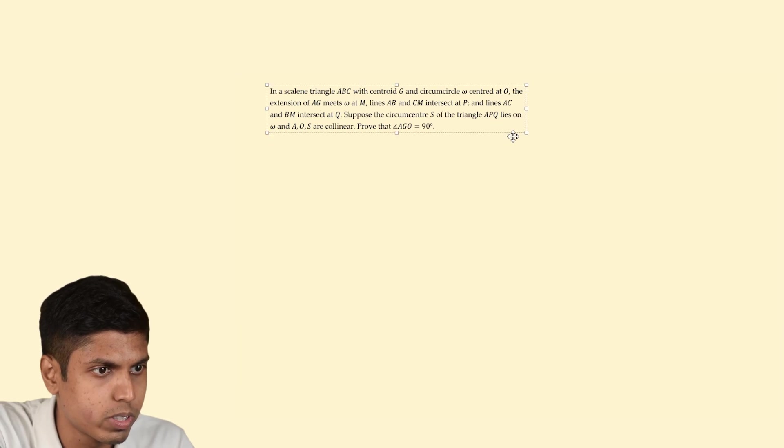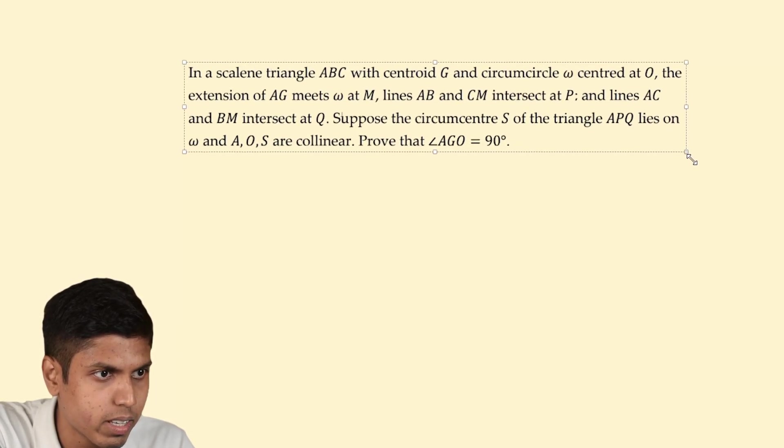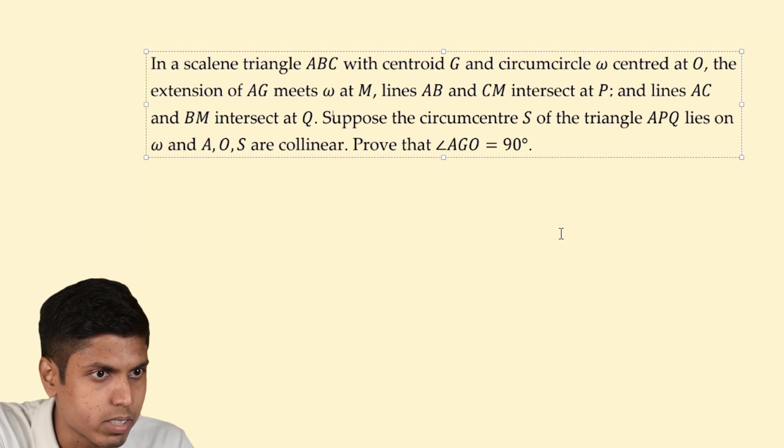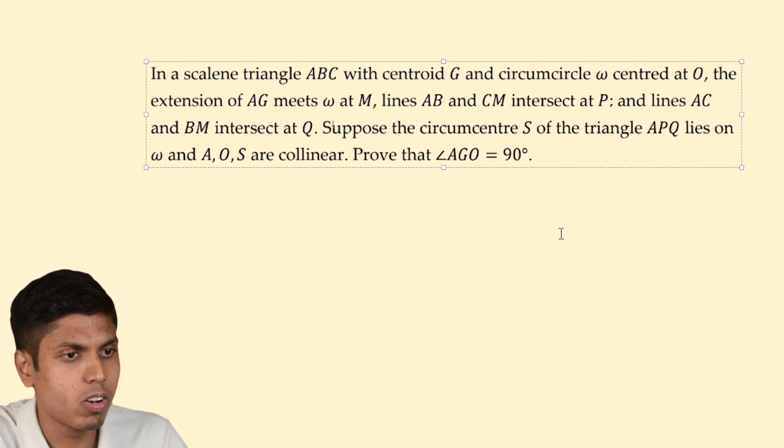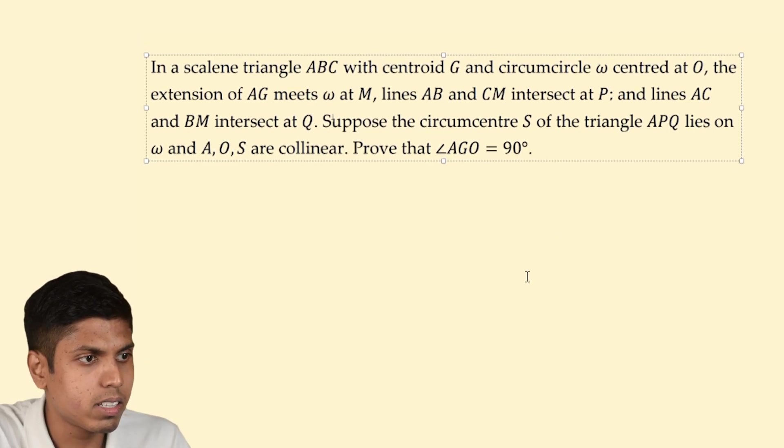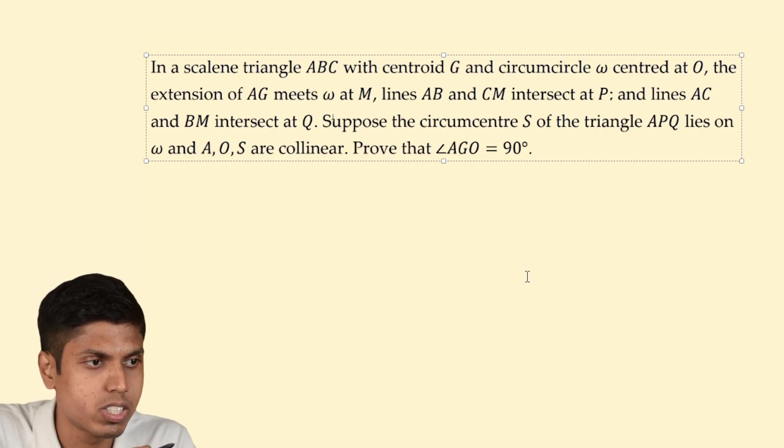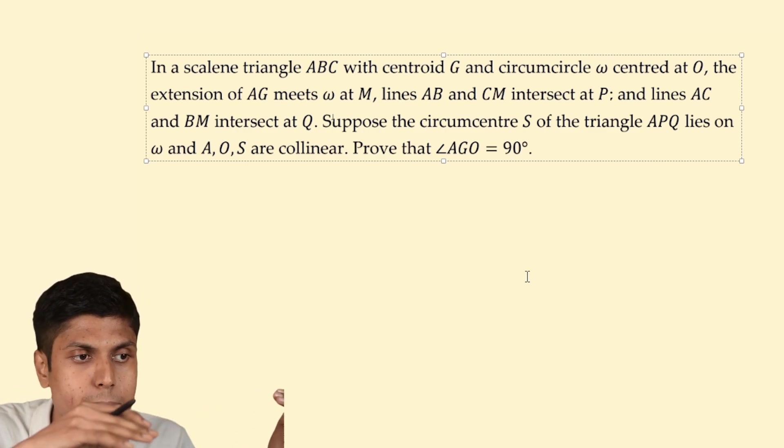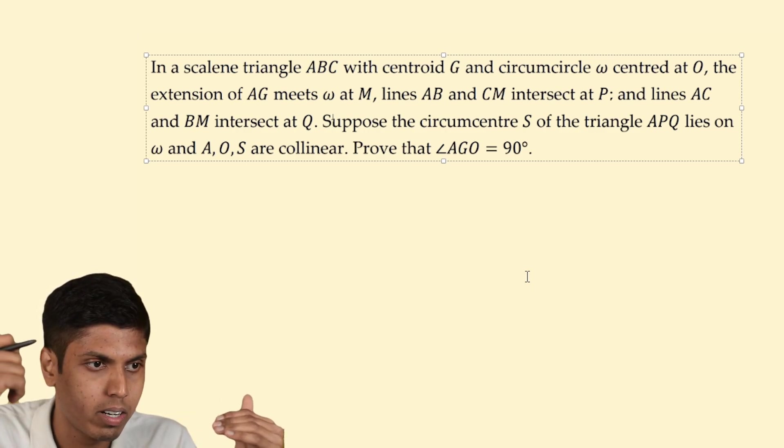We are going to solve a problem inspired by SMO Open Section 2023 and apply homothety in a beautiful approach. In a scalene triangle ABC with centroid G, we have a circumcircle centered at O. The A median AG intersects its circumcircle at M and we extend CM beyond M, BM beyond M to intersect AB and AC respectively at P and Q.